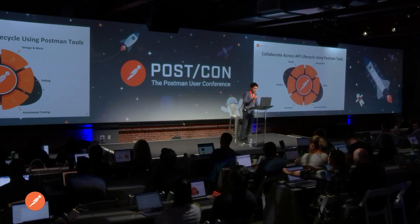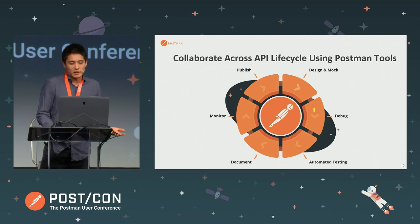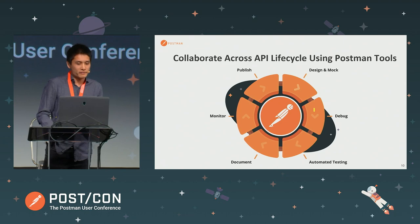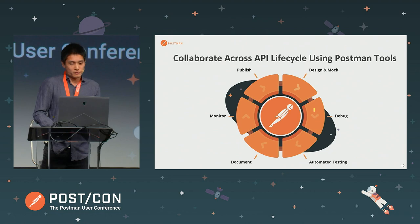This is the API lifecycle I'm talking about. Your typical API lifecycle starts with designing and mocking your APIs, debugging as you implement, then setting up automated testing, generating documentation, monitoring the API once deployed, and publishing it to make it discoverable. Postman has tools that support every stage of that lifecycle. We'll talk more about that in this afternoon's session — this session will focus on some of the main features.